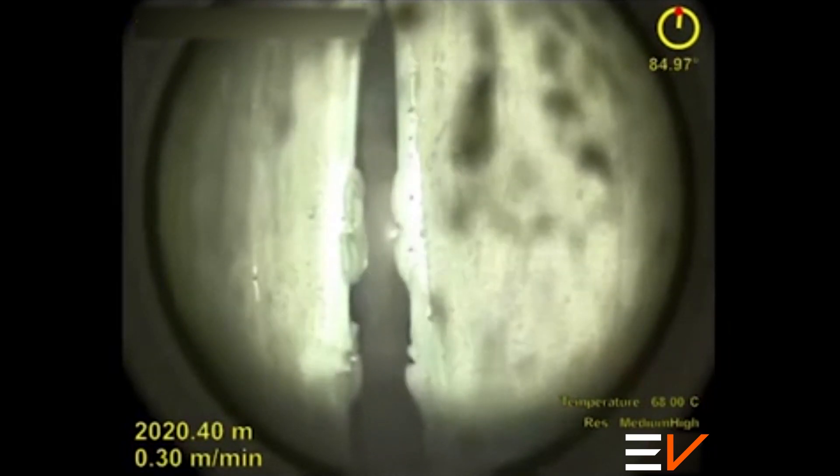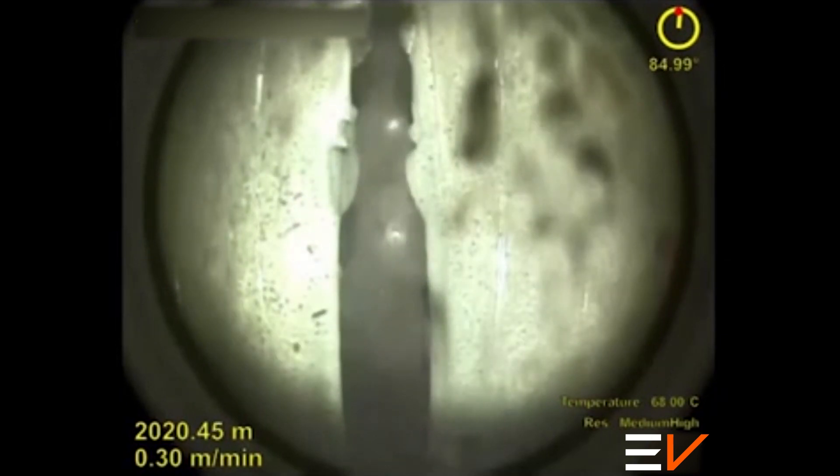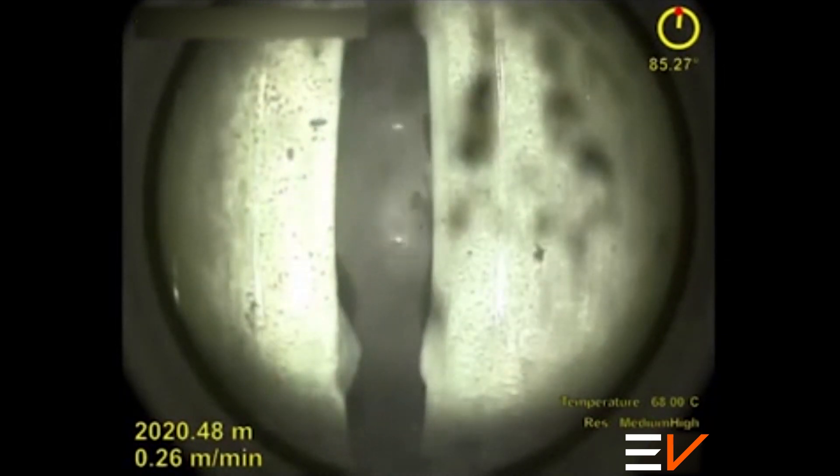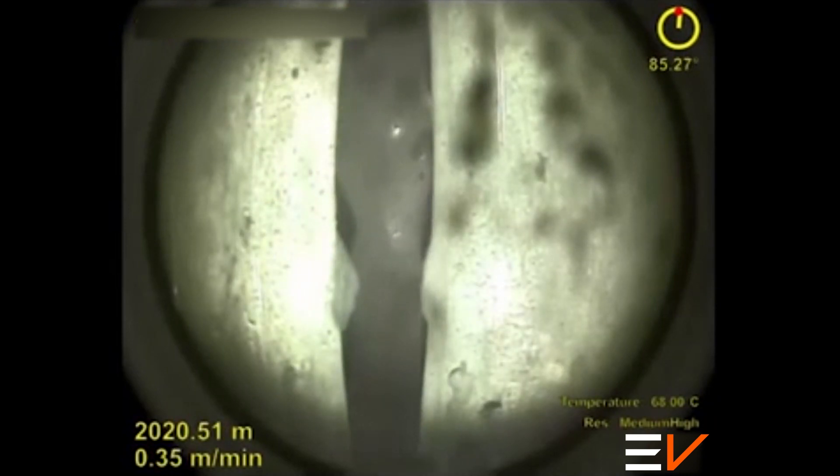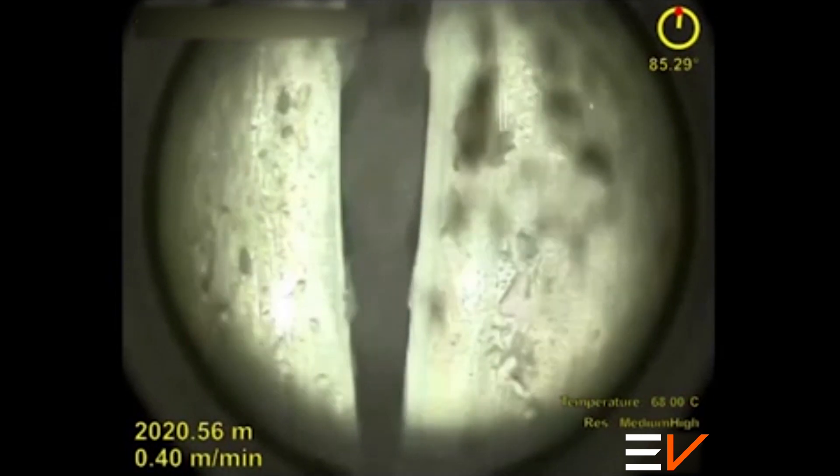The HD e-line camera provides a level of detail unachievable from a multi-finger caliper. With both down-view and side-view cameras providing full-color video, features such as corrosion, wear, deformation, splits or holes can be inspected in detail.